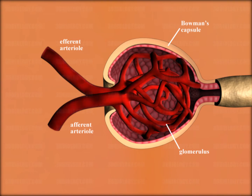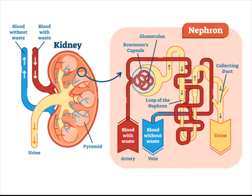Urine is formed in the nephron from glomerular filtrate. Kidneys filter metabolic waste out of blood and remove water. This allows the urinary system to regulate the composition of fluids, including salts, water, and waste. The kidneys also regulate blood pressure and maintain pH, and they process more than 200 liters of blood a day.